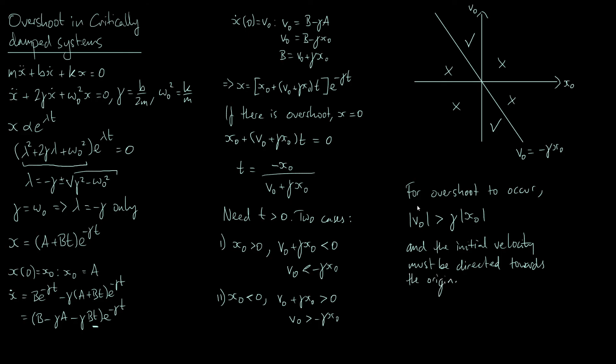So that's the result: as long as |v₀| > γ|x₀| and the velocity is directed toward the origin, you will get overshoot in a critically damped system. There is actually a nice physical interpretation of this result, which you can argue in just one or two lines, and I'll cover that in two videos' time. In my next video, I'll do a similar analysis for the heavy damping case.